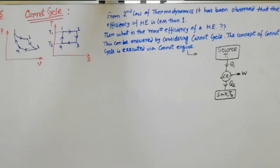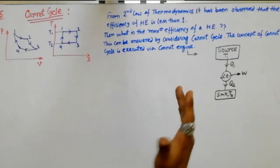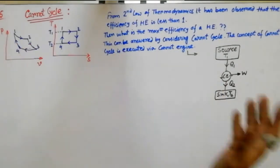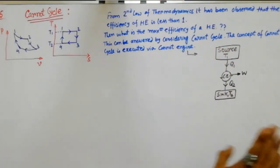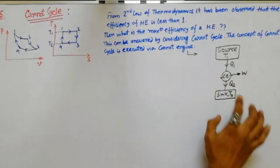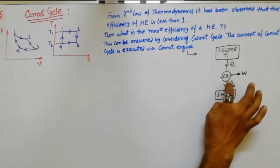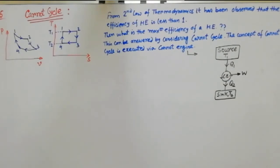The scientist Sadi Carnot — he was a French engineer — introduced the Carnot cycle. The concept of the Carnot cycle is executed by a Carnot engine. If you consider the Carnot cycle on an engine, that engine is known as a Carnot engine. I have shown a block diagram for a Carnot engine here. The same kind of block diagram you have seen for the heat engine, but the cyclical device inside is labeled CE, meaning Carnot engine. If we derive the efficiency for the Carnot engine, we can see what the maximum efficiency will be.